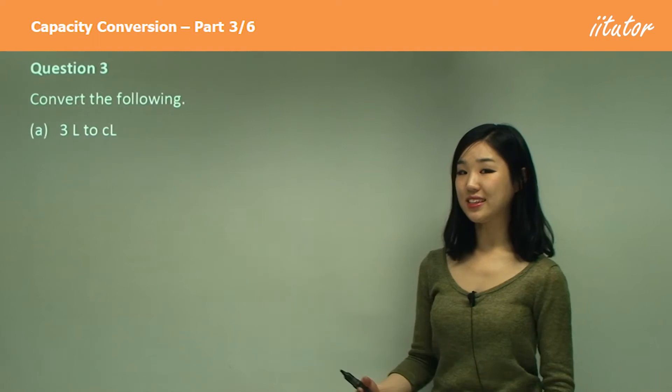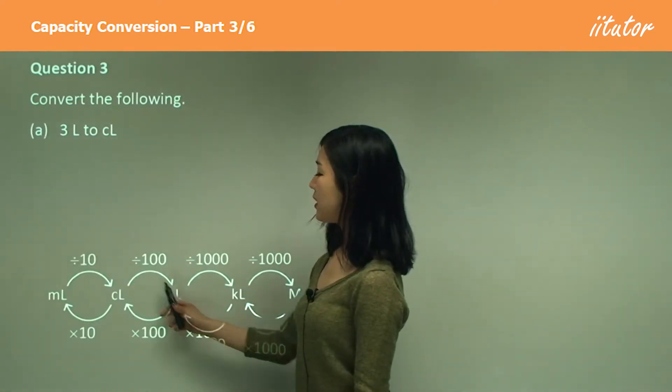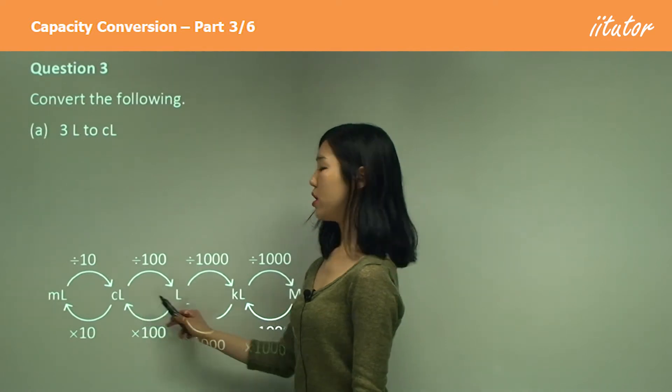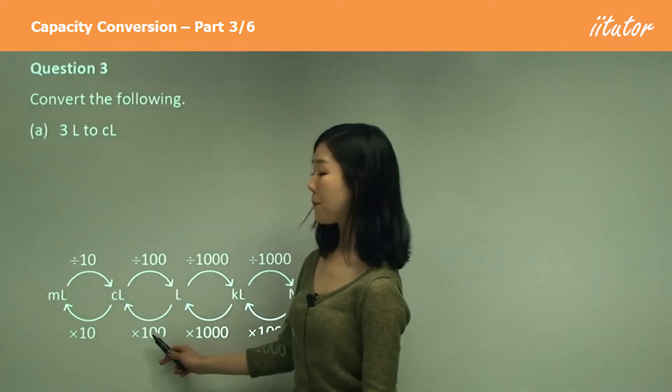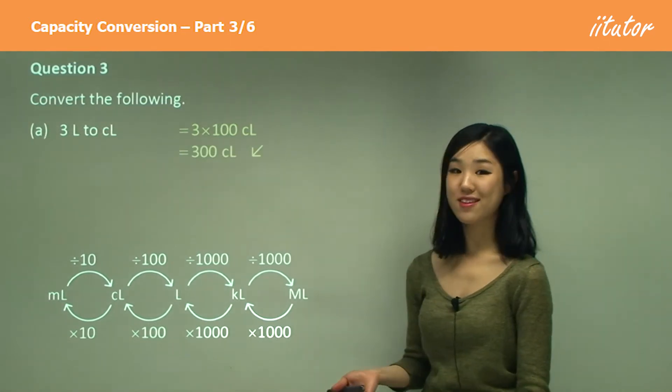Hey, it says 3 liters to centiliters. Okay, let's have a look. Liters to centiliters is from here to here, large to small. So we're going to be multiplying by 100. So 3 times 100, which is simply 300 centiliters.